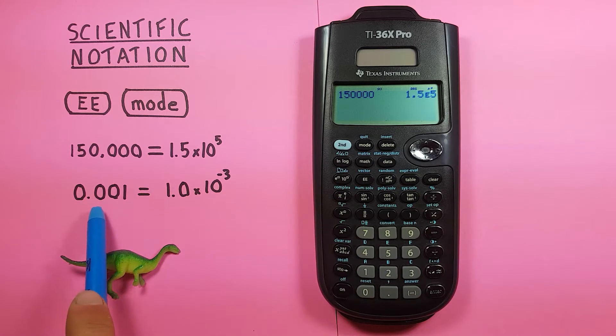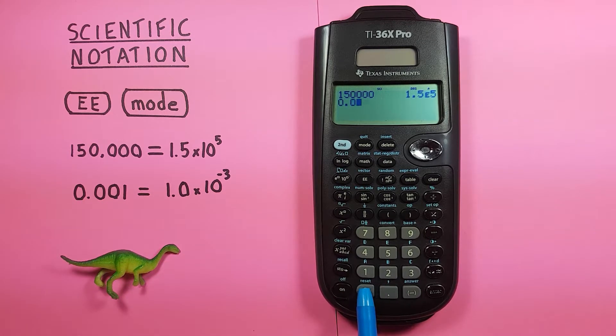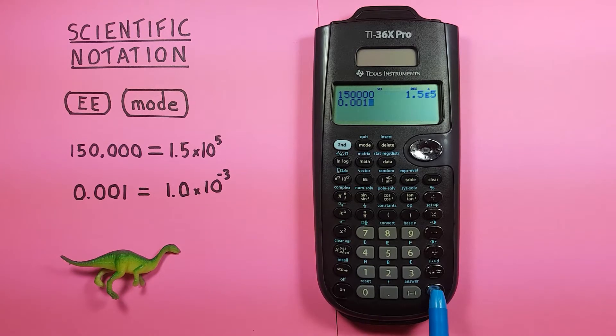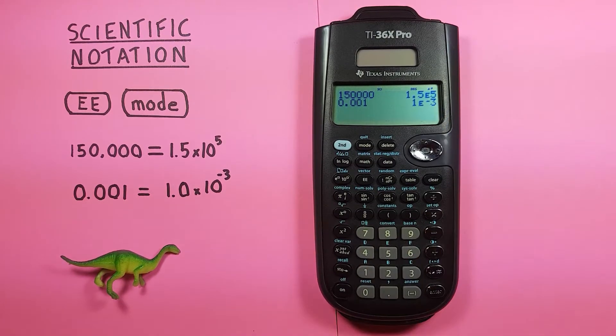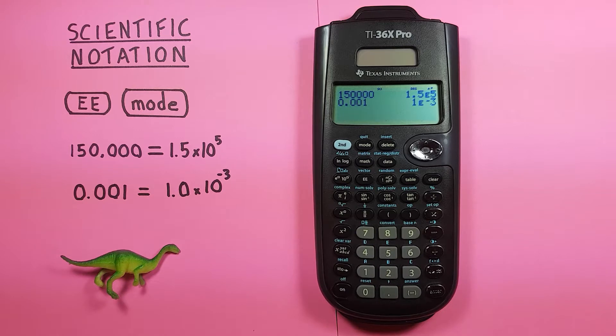Again, this works with small numbers as well. So we have our 0.001, enter, there we go. That's the same as 1 times 10 to the power of negative 3.